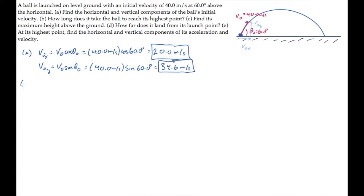Part B asks how long it takes the ball to reach its highest point. That's this point right here, and we'll call that time T sub H, the time to reach the highest point. It occurs where Vy equals 0. The ball is changing from moving up to moving down at that time, so instantaneously it has no vertical component of velocity.